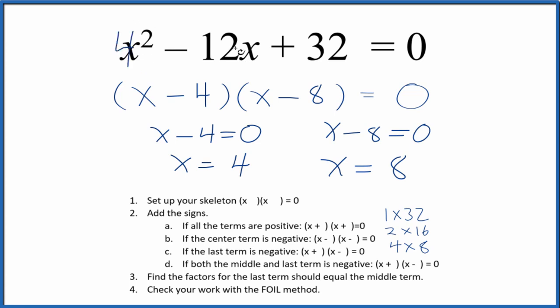And if we put 4 in for x, and we did the math, this side of the equation here, it would equal 0. Likewise, if we put 8 in for x, and we did the math, it would equal 0 again. So we've done this correctly.